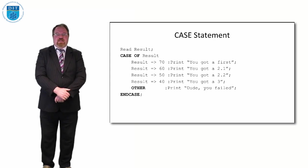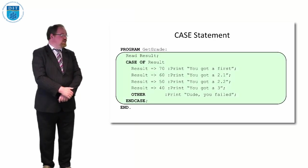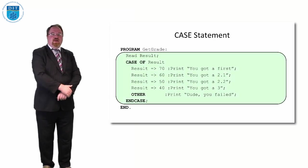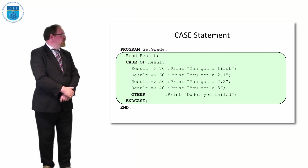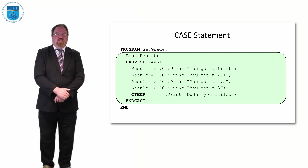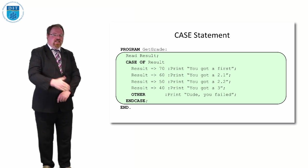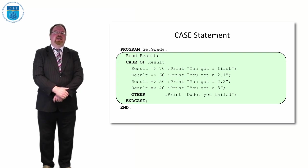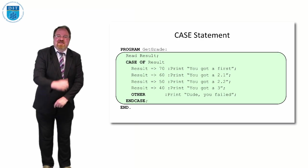If we want to show that as a program, we give it a name on top, GetGrade, read in the percentage result. Let's say you have 55: it's not less than or equal to 70, won't do that one; it's not less than or equal to 60, won't do that one; it is less than or equal to 50, so it'll do that one and say you've got a 2.2. Thanks very much, we'll see you on the next episode.